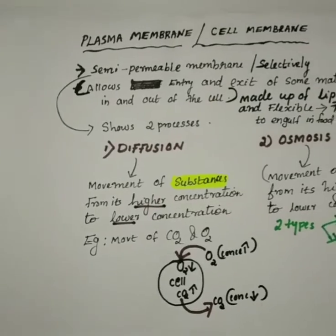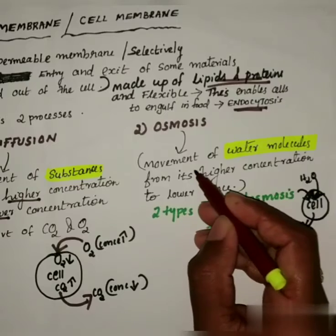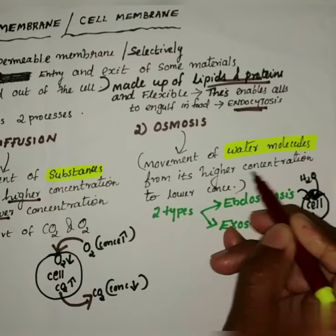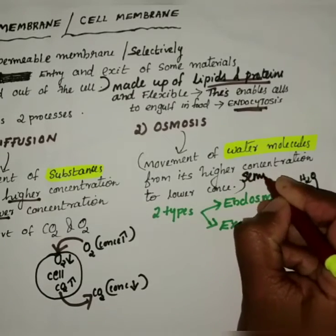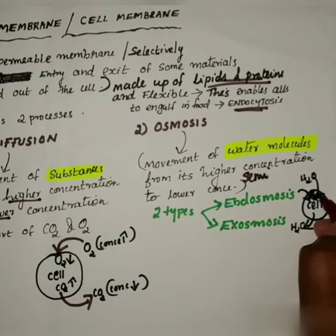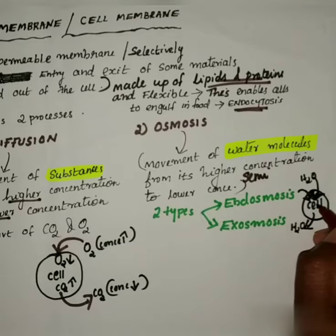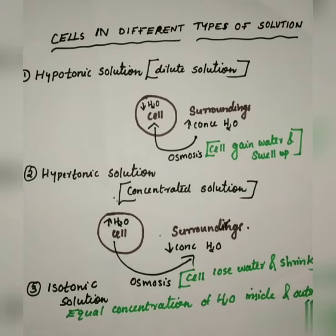The next process is osmosis. Osmosis is the movement of water molecules from higher concentration to lower concentration through a semi-permeable membrane. Osmosis is of two types: endosmosis and exosmosis. Endosmosis means movement of water molecules inside the cell. Exosmosis means movement of water molecules out of the cell.